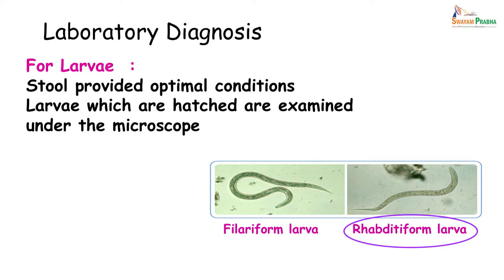If the stool is preserved at the right temperature with enough moisture and in a cool environment, the ova will hatch and produce rhabditiform larvae. If kept long enough — another 5 to 10 days — these rhabditiform larvae may also mature into the infective filariform larvae. The larvae can be identified based on their mouth parts and the length of the alimentary canal.